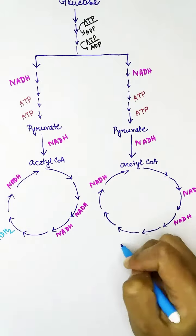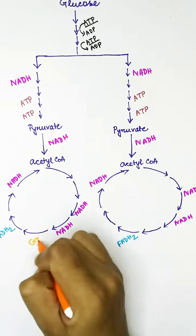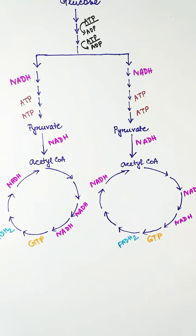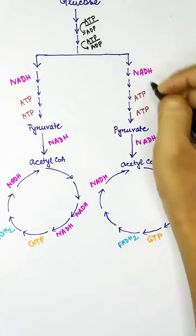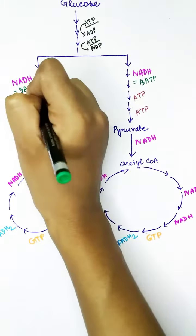In each Krebs cycle, one FADH2 molecule and one GTP molecule is also produced. Each NADH molecule produces three ATPs in electron transport chain.